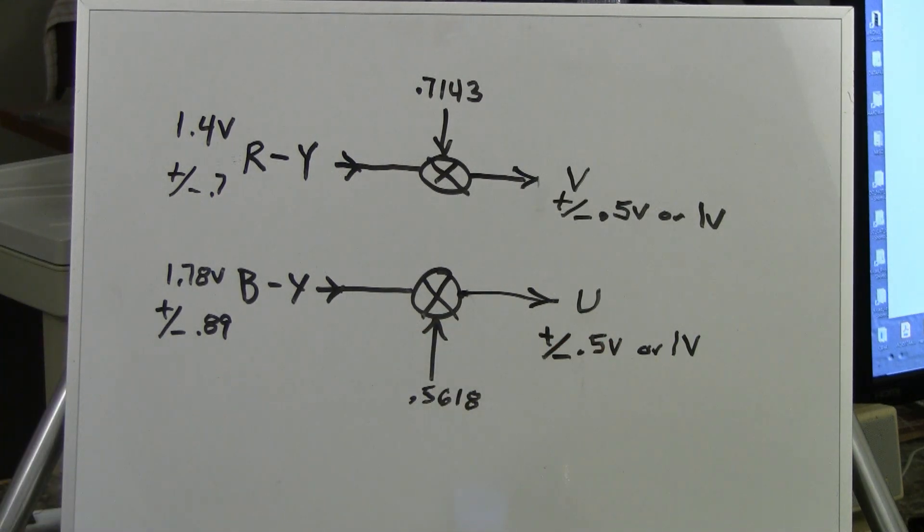And now the Y is 0 to 1 volt. V, which represents R minus Y, is the scaled R minus Y that fits in a 1 volt channel. U is the scaled B minus Y that fits in a 1 volt channel. That is the only difference between U and V and R minus Y and B minus Y is their scale. Otherwise, the signals are still identical. They're just a slightly different size. And that completes the encoding end of the process. If you had a camera like this and it had a Y, U, and V jack on the back, these are the voltage levels you would see at those jacks.